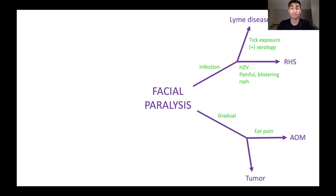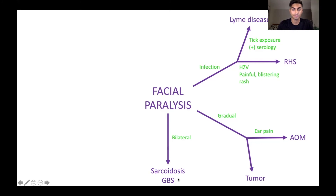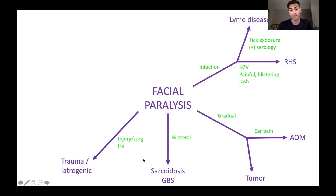Another cause to think about with a gradual onset is potentially a tumor. Maybe the patient has bilateral facial paralysis — some conditions to think about in that case would be sarcoidosis as well as Guillain-Barré syndrome (GBS). Upon interviewing, you might find out that the patient has a history of recent injury or recent surgery to the face, which could have caused damage to the facial nerve. Then we would explain the facial paralysis as being due to some sort of trauma or iatrogenic cause.